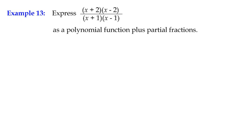We have here an improper rational function. It's improper because the expression in the numerator is a quadratic expression and the expression in the denominator is also quadratic. Technically the order is the same, but a rational function can only be proper if the order in the numerator is less than the order in the denominator. So if the order is the same we still have to regard it as improper, and we still have to do algebraic long division to create a quotient and a proper rational function remainder.